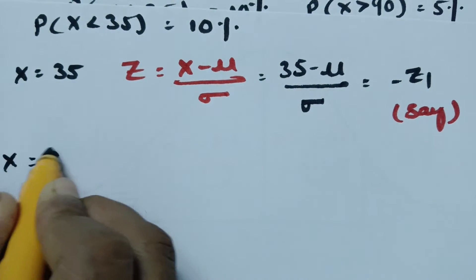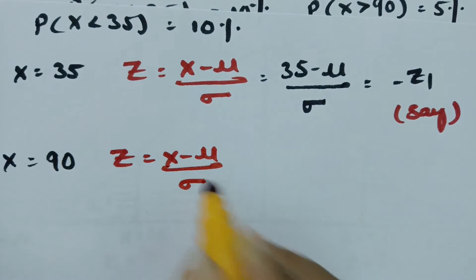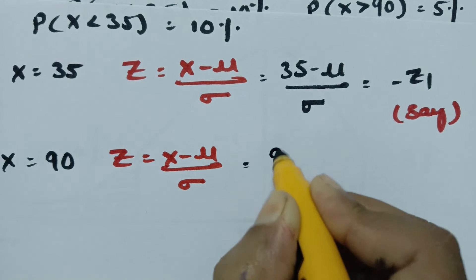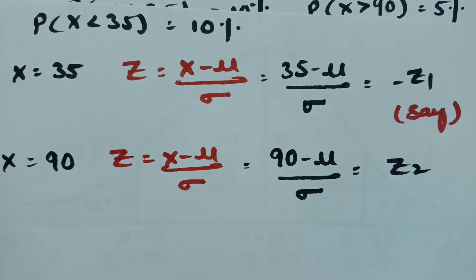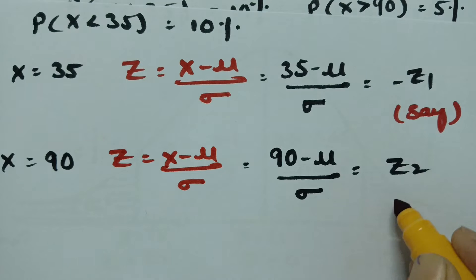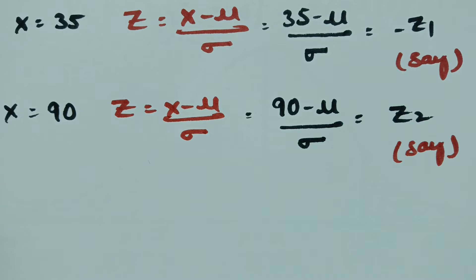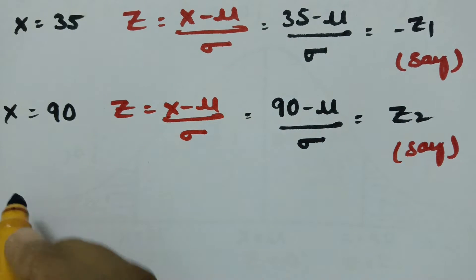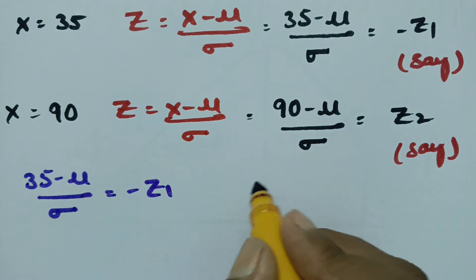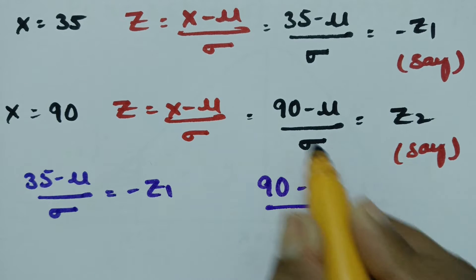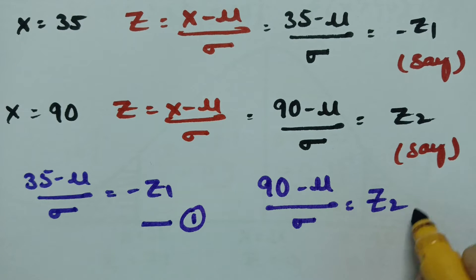When x equals 90, the z value is x minus mu by sigma. Substituting, this will be 90 minus mu by sigma, which is a positive value as it is towards the right side of the curve. This is z2. So we now have two equations: equation 1 is (35 minus mu)/sigma equals minus z1, and equation 2 is (90 minus mu)/sigma equals z2.